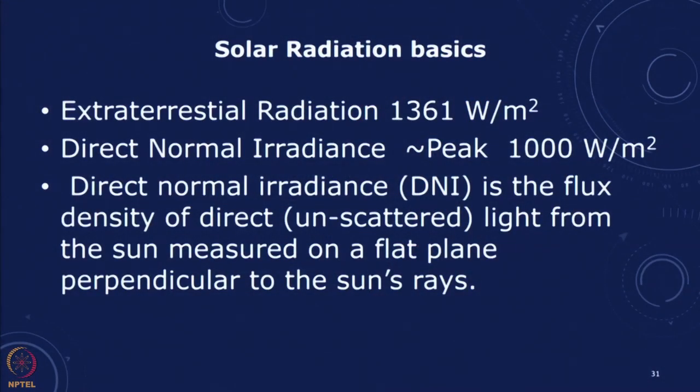DNI is the flux density of the direct unscattered light from the sun, measured on a flat plane perpendicular to the sun's rays. This DNI is perpendicular to the sun's rays, and this flux varies over the day as the sun rises, reaches a peak, and then goes down in the evening. Every hour we can measure the DNI and make a plot, and we can take the aggregate amount of irradiance over the year — that is plotted as the annual DNI.